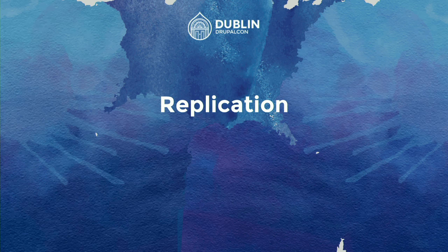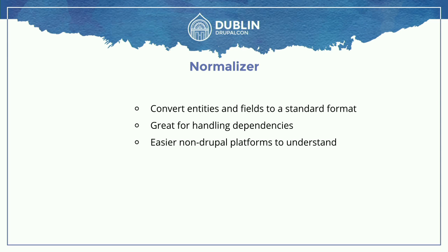Replication is another module we need. The replication module holds all the services and information needed to do it. We normalize all entities using a normalizer, so we can convert all content entities — whether nodes, blocks, taxonomy terms, or whatever — into a standard format. We also handle dependencies: if there are any entity references, we use UUIDs so we know exactly what entity is being referenced. When you replicate to another site it may not have the same node ID, but the UUID is always the same. You can also replicate content to non-Drupal platforms like CouchDB or PouchDB.